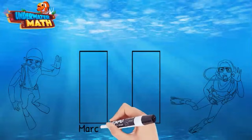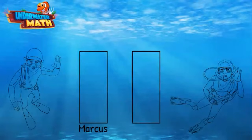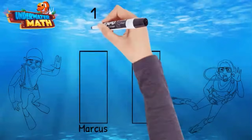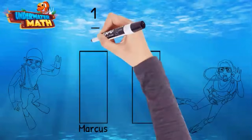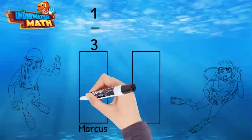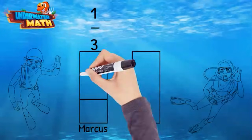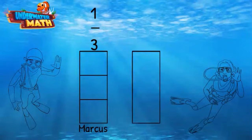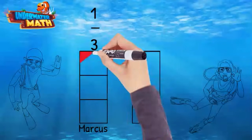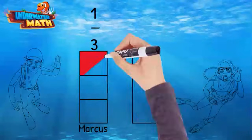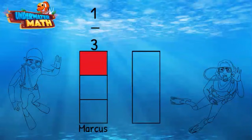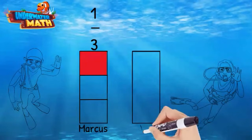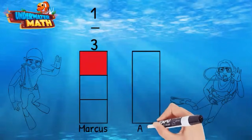Let's put Marcus's model on the left. He finished one-third of his homework, so we will divide his model into three equal parts. Since he finished one-third of his homework, that tells us we need to shade one part of the model.